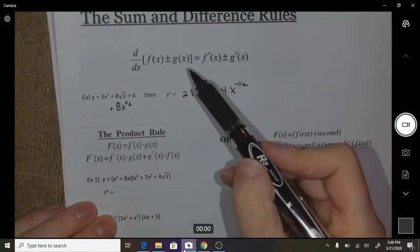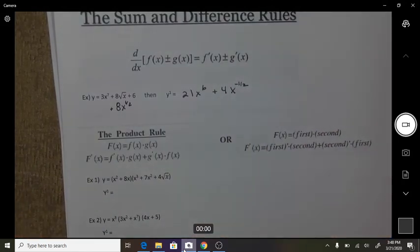So the sum and difference rule is just adding or subtracting the derivatives of each individual function.